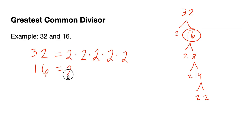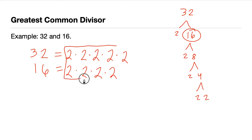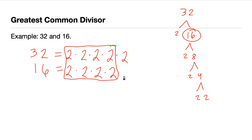And for 16, we can see it right there: 16 = 2 × 2 × 2 × 2, which is four 2s. To get the GCD, we box the numbers which are common to both. We can see four 2s are common. The extra 2 in 32 is outside the box since there is no corresponding 2 in 16, so it's not common to both.